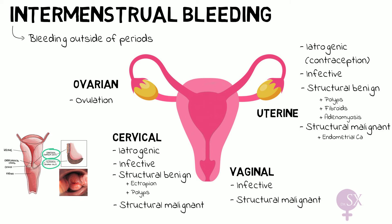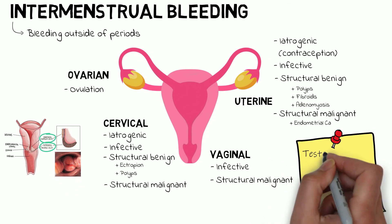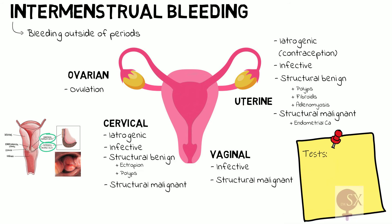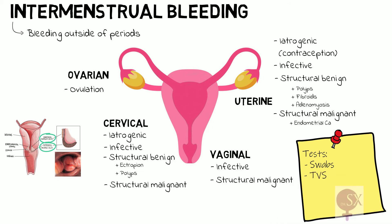Those are all the causes of IMB. If a patient presents with IMB, we need to take a good history and examination looking out for any of these causes. We can then take some tests directed at what we are suspecting: swabs if we're thinking of an infective cause, a transvaginal ultrasound if we're suspecting a structural cause, and if we're thinking about a malignant cause, a smear test and an endometrial biopsy.